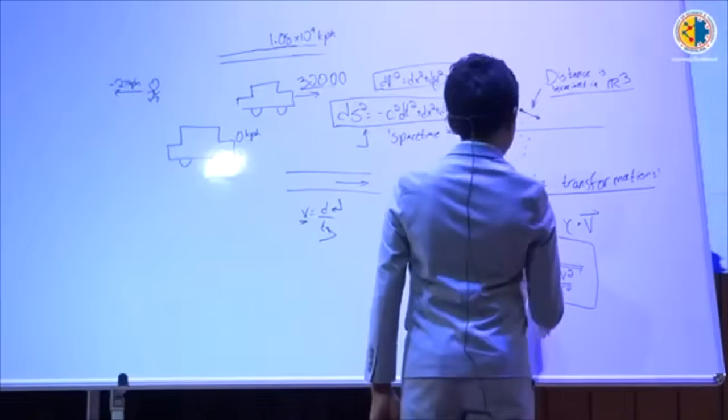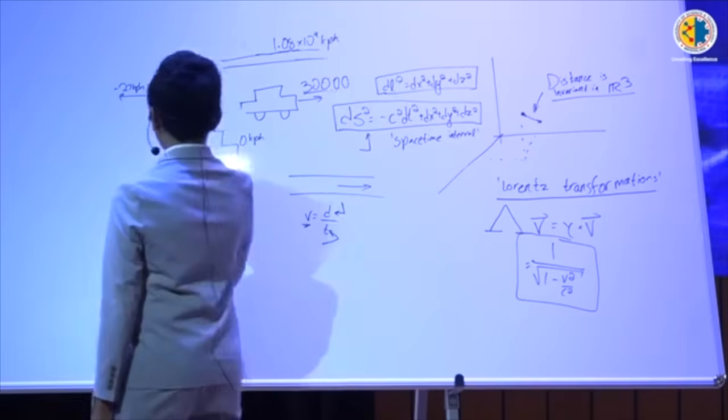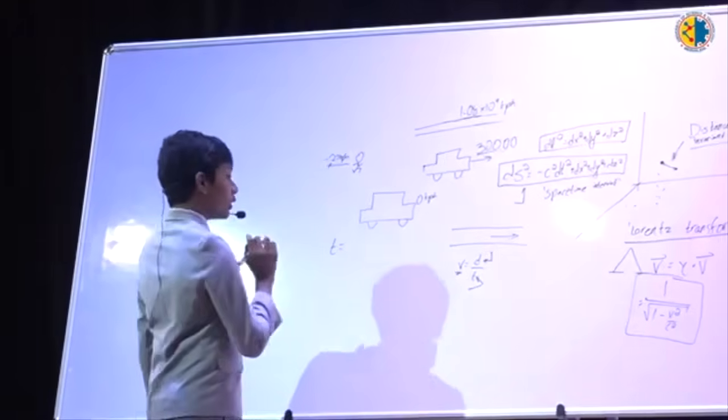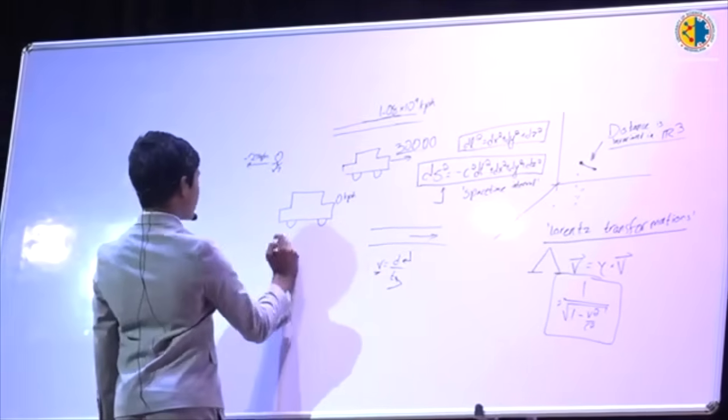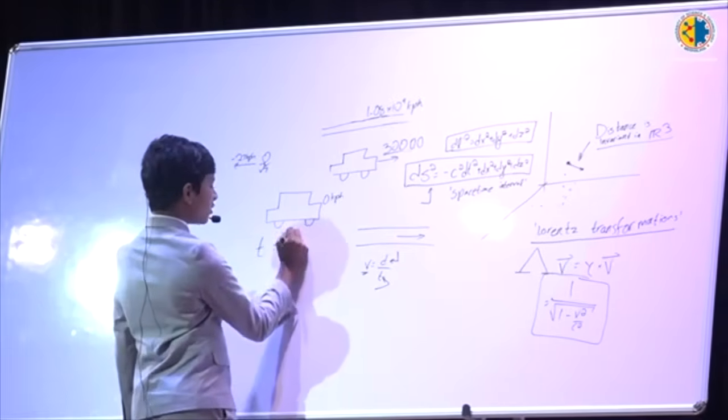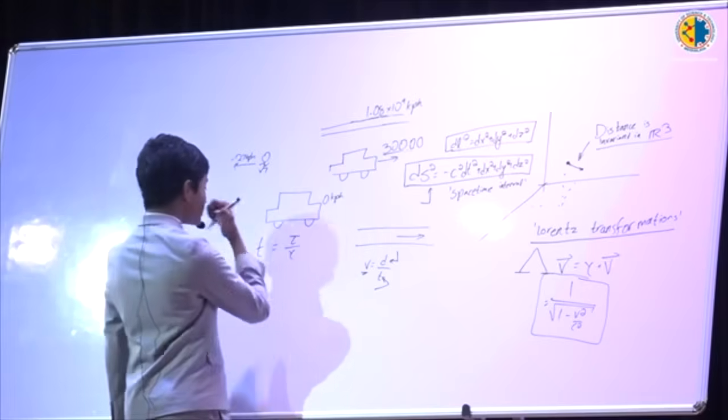And, this is essentially how you calculate time dilation. So, what I believe is that the time that others observe is going to be the time in your reference frame, also known as the proper time, divided by gamma.